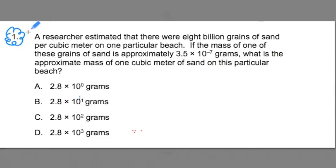Let's start with number one. A researcher estimated there were 8 billion grains of sand per cubic meter on one particular beach. If the mass of one of these grains of sand is approximately 3.5 times 10 to the negative 7th grams, what is the approximate mass of one cubic meter of sand on this particular beach? There's lots of important information, like what we're looking for. We're trying to find the mass of one cubic meter of sand.